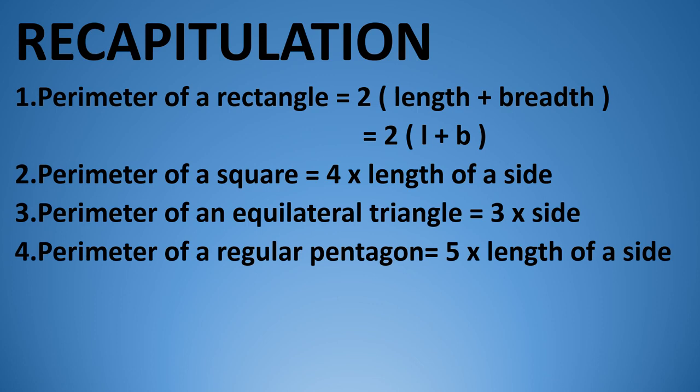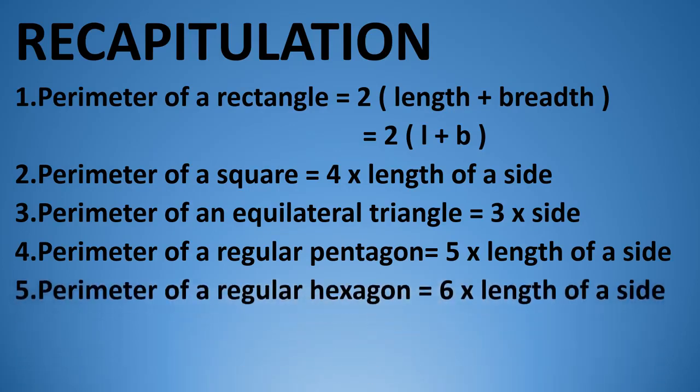As all the sides are equal, we can take the length of any side. Fifth, perimeter of a regular hexagon. A regular hexagon has 6 equal sides, so its perimeter is 6 multiplied by length of a side.